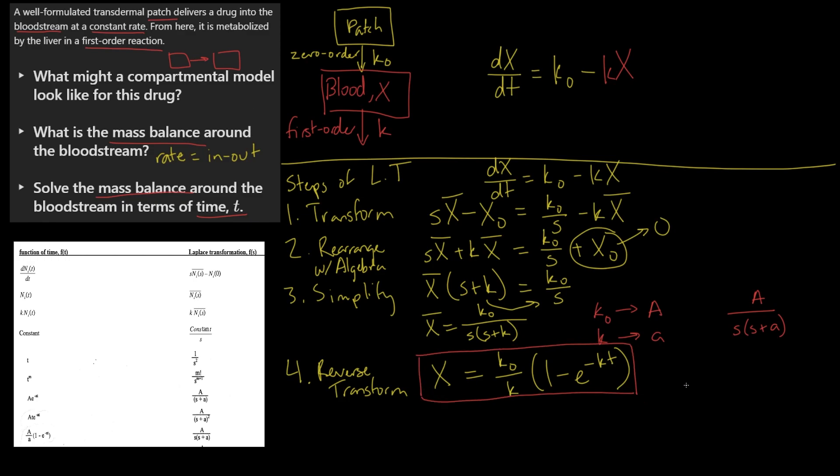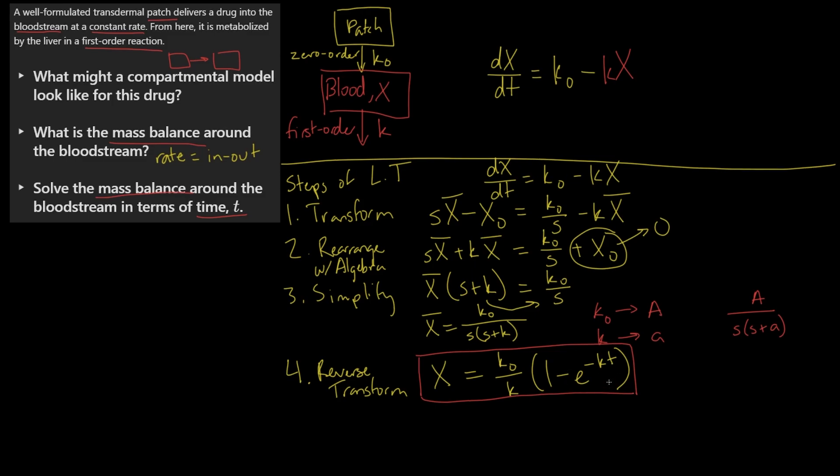And now what would this graph actually look like? We have e^(-kt) on this side. You can imagine a graph like e^(-x), where it would cross the y-axis at one, it would look something like this, and downwards.